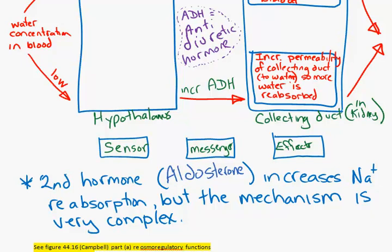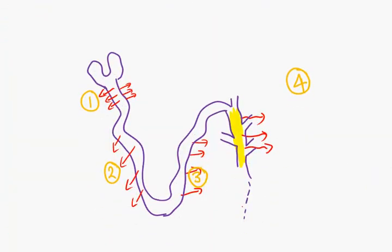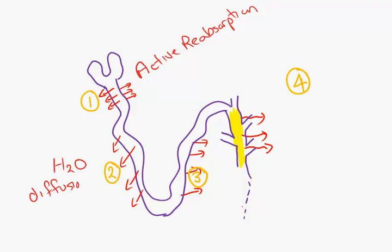We can probably summarize everything that happens in the kidney as there are four steps. There are four processes. The first process, active reabsorption. Mainly active. The second process is water diffusion. Third process, salt diffusion, but, and some active transport.